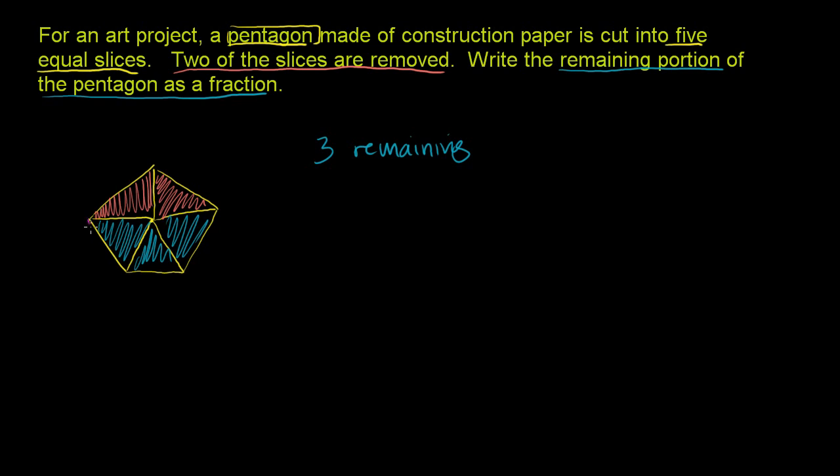So the entire pentagon, if you consider all of the slices, we have five slices. So the entire pentagon is made up of five total slices. So it's three remaining out of five total slices.